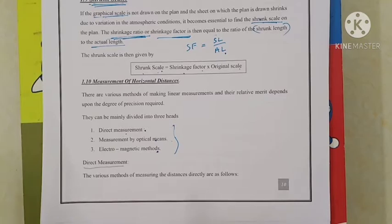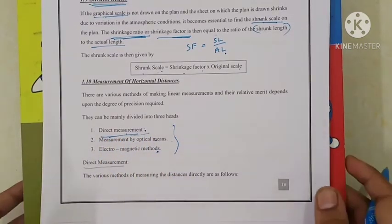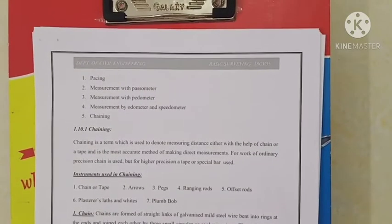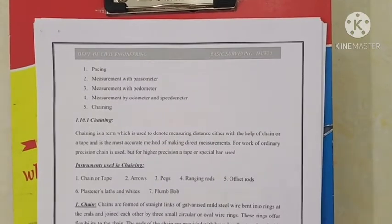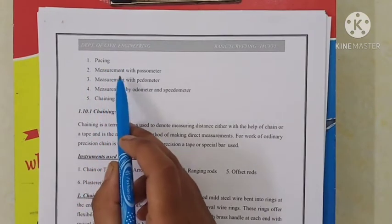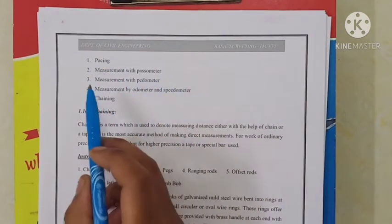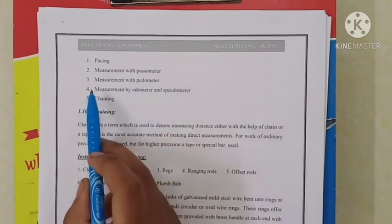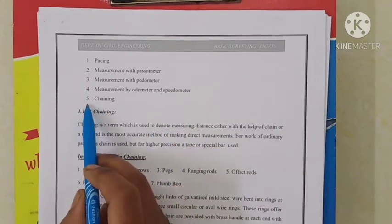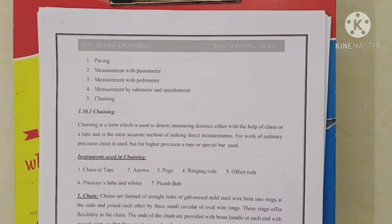First we will see direct measurement. In direct measurement there are various methods: first pacing, second measurement with passometer, third measurement with pedometer, fourth measurement by odometer and speedometer, and fifth chaining. These are the methods used in direct measurement.